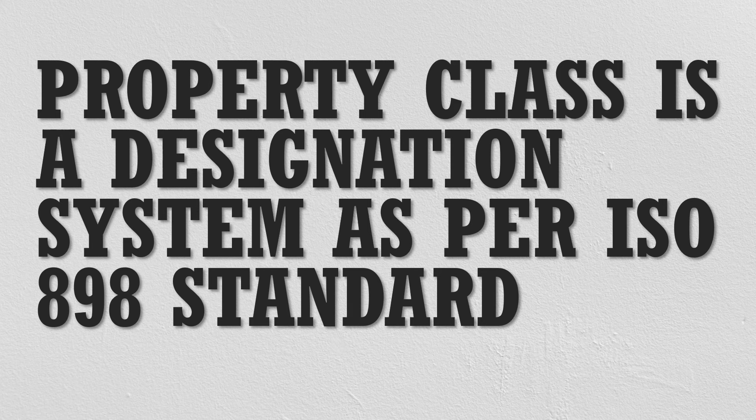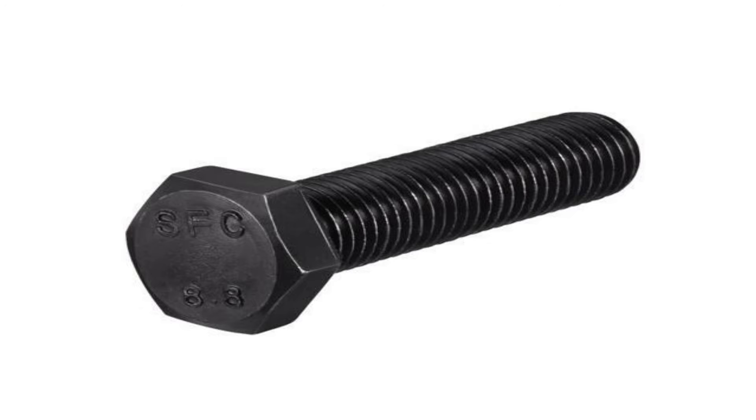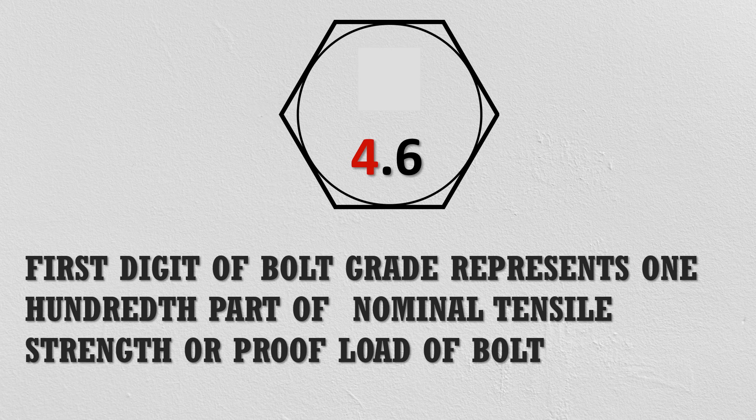As per ISO 898, the metric fasteners are designated by a symbol comprised of two numbers separated by a decimal — for example, 4.6 and 8.8. The property class is normally stamped on the head of the bolt.